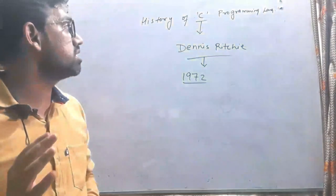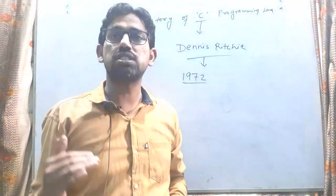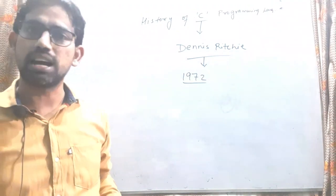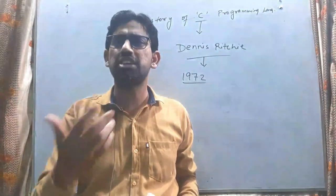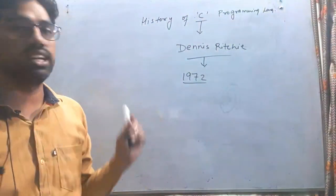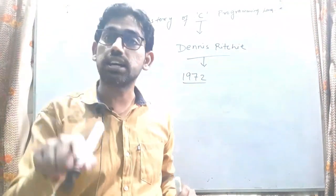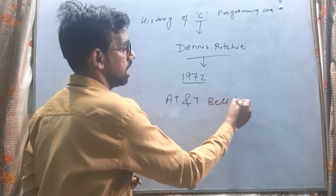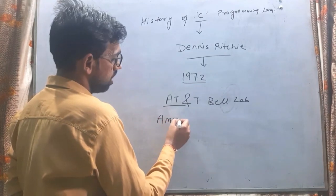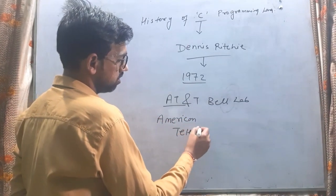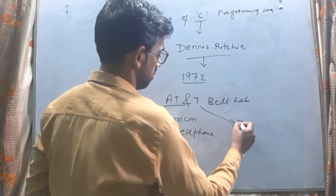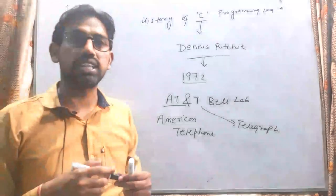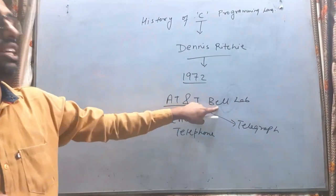Programming language में हमें ध्यान रखना पड़ता है कि कौन-कौन सी चीजों पर focus करना है। यह history या geography की तरह नहीं है कि रटते रहें — आपको main points दिमाग में रखने पड़ते हैं, point-wise याद करिए। किसने develop किया — Dennis Ritchie। कब किया — 1972 में। कहाँ किया — AT&T Bell Laboratory में। AT&T का मतलब है American Telephone and Telegraph। तो याद रखिएगा, C को AT&T Bell Lab में develop किया गया।